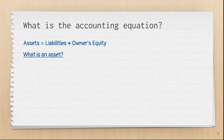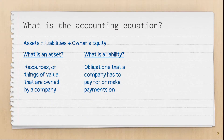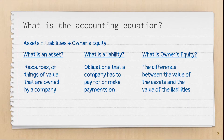But wait, what is an asset? An asset is a resource or thing of value that is owned by a company. What are liabilities, you ask? Liabilities are obligations that a company has to pay for or make payments on. And don't forget owner's equity. Owner's equity is the difference between the value of the assets and the value of the liabilities — in other words, it's the value owned by the owners or stockholders of a company.